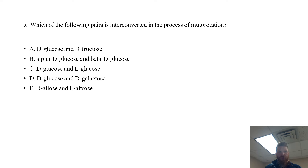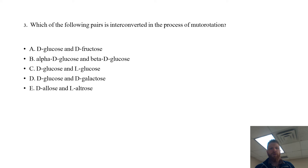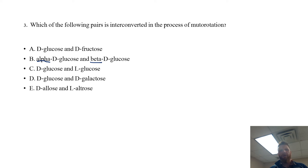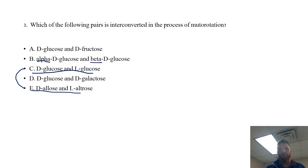The next question asks: which of the following pairs is interconverted in the process of mutarotation? Answer option A is D-glucose versus D-fructose. B is alpha-D-glucose and beta-D-glucose. C is D-glucose and L-glucose. D is D-glucose and D-galactose. E is D-allose and L-altrose. If you look at answer options C and E, those are both a D sugar to an L sugar. So if one of those is right, they both have to be right, which is a good way to discriminate — so C and E are out.